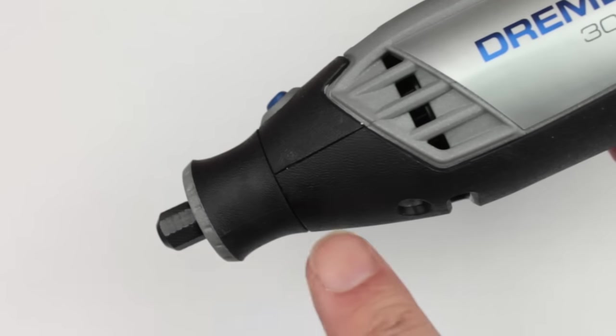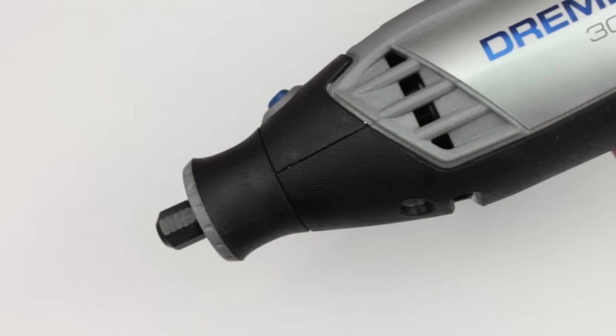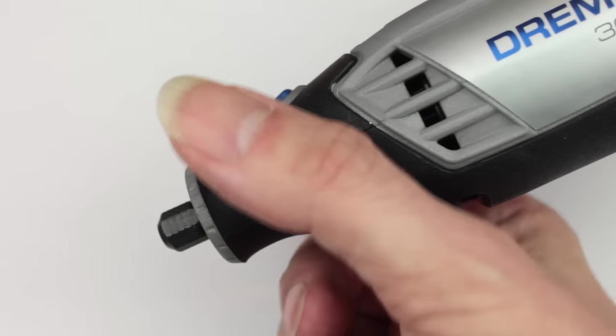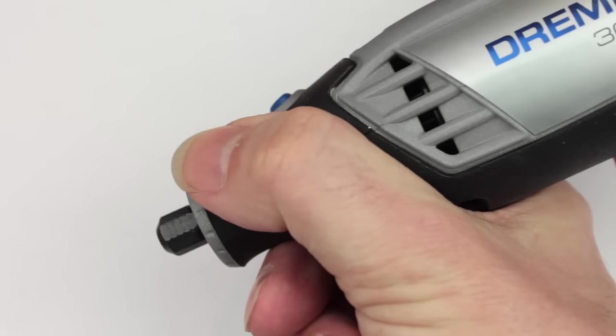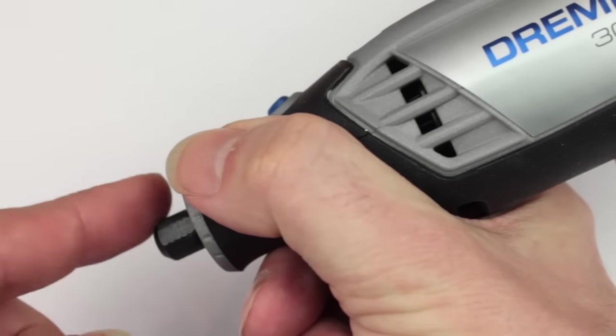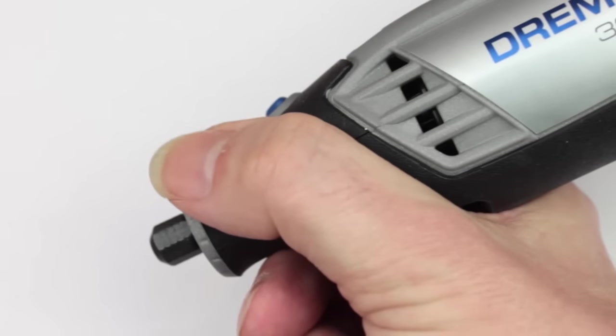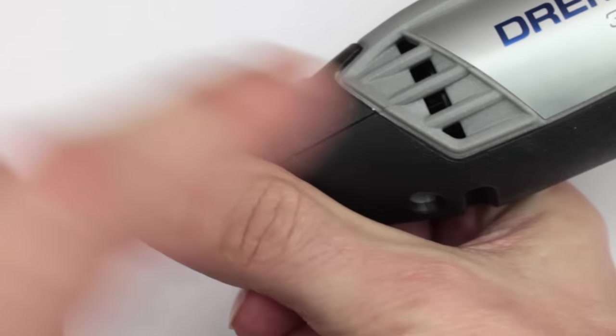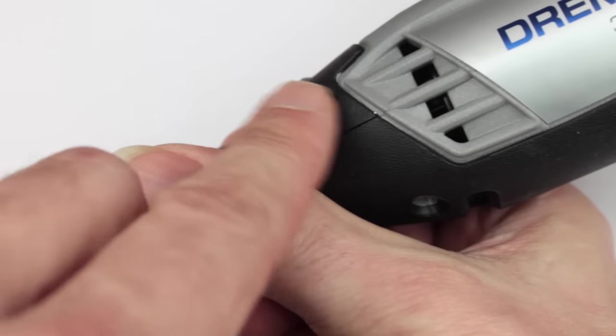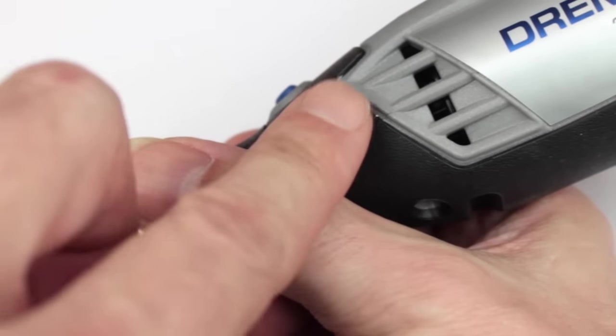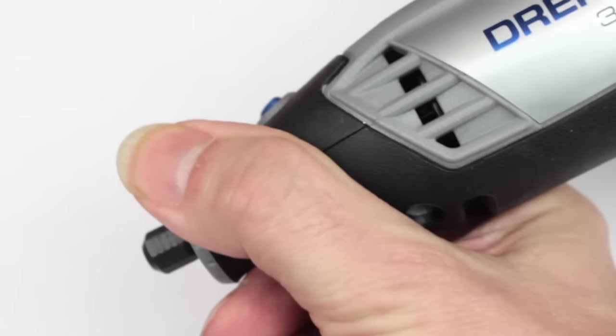So for fine intricate work you can hold it at the end here in what's referred to as a pencil grip. Just grab it at the end there like a pencil and you can see your fingers are very close to the tip there, so for fine engraving and carving work this really is a comfortable way to work. Again, all the rubberized material is in contact with your hand so it's really comfortable and a nice safe solid grip.